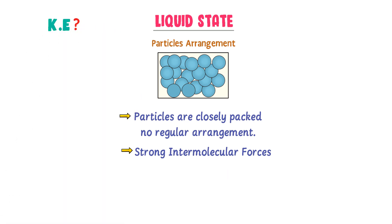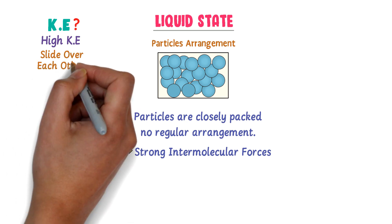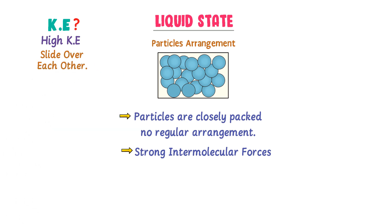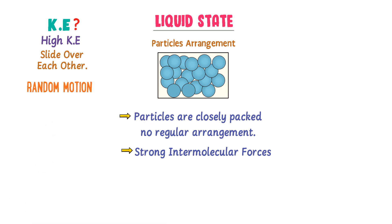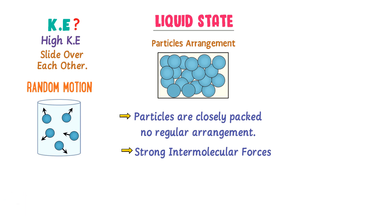What about the motion or kinetic energy of particles in liquid state? Well, the particles of liquid have high kinetic energy — the particles of liquid slide over each other. In chemistry, we say that particles of liquids are in random or irregular motion. For example, consider water in this glass — the particles of water move in all directions and constantly collide with the walls of the glass.